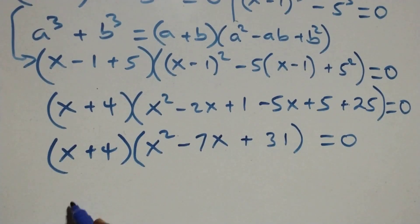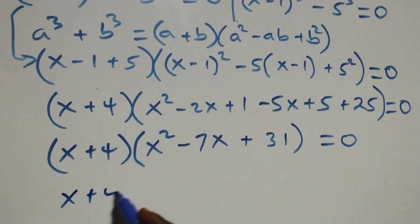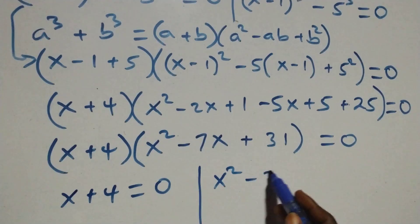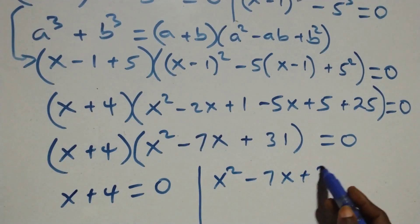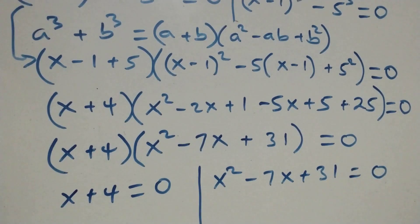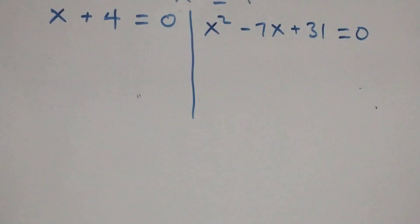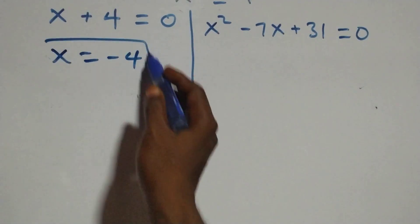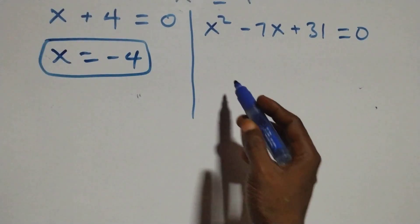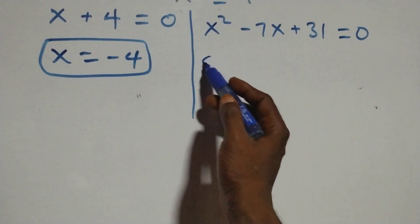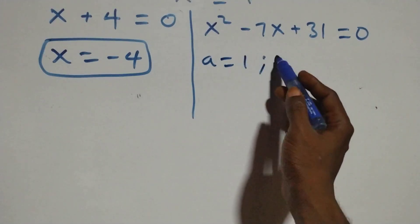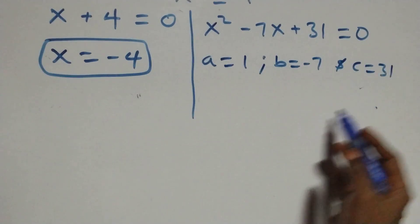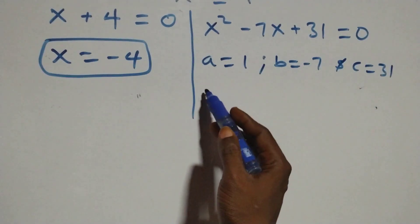We have two possible cases: x + 4 = 0, giving x = −4, which is a real solution. Or we have the quadratic x² − 7x + 31 = 0, where a = 1, b = −7, and c = 31.